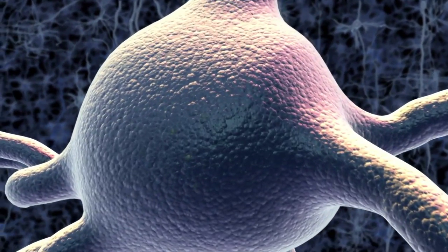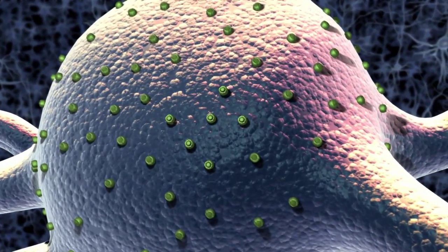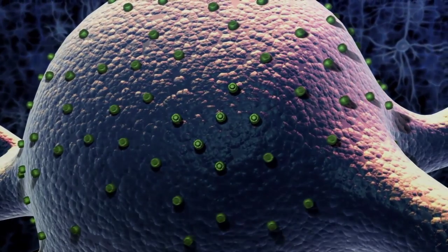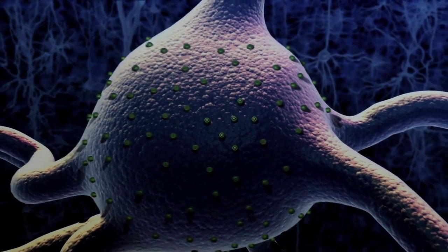The neurons expressed the DNA, manufacturing copies of the channelrhodopsin protein and installing them in their membranes. As predicted, the researchers were now able to activate these neurons using light, without affecting neighboring neurons.